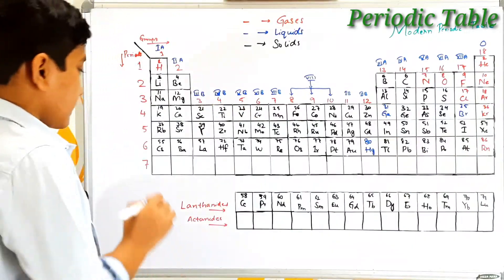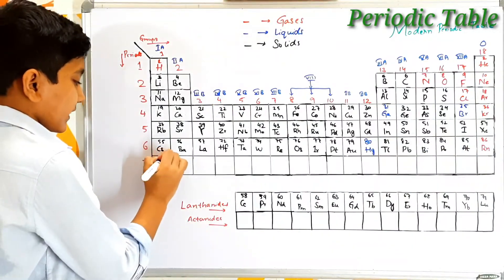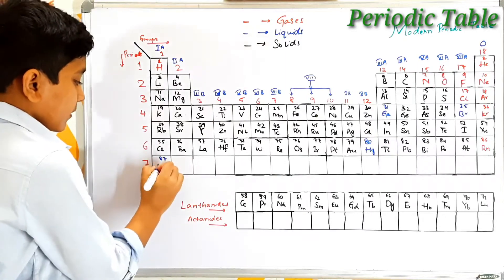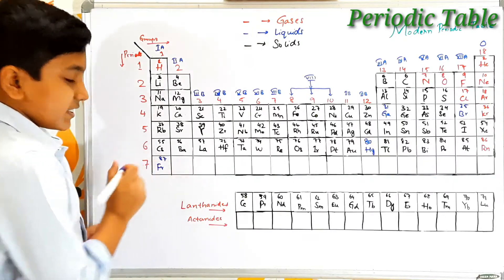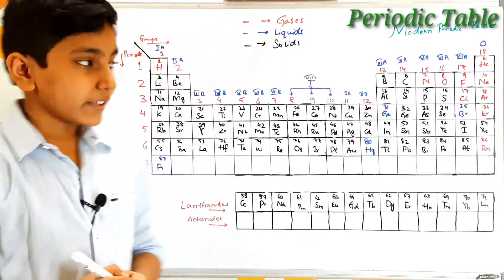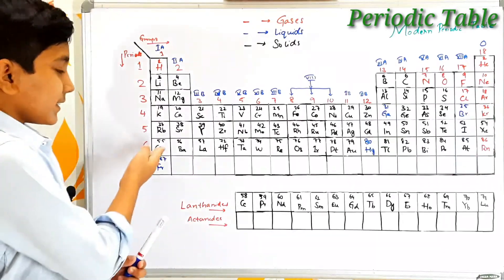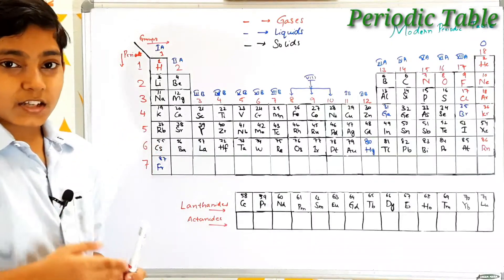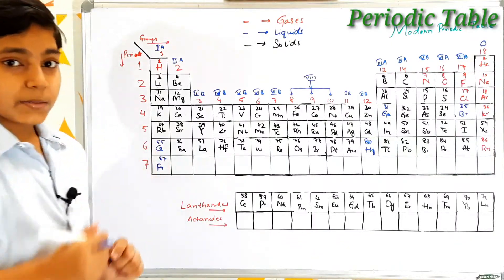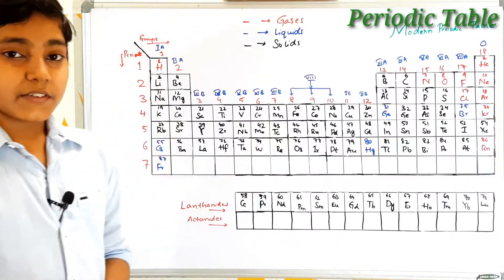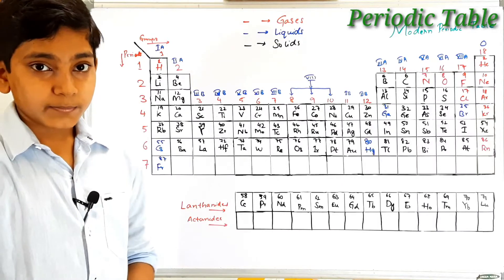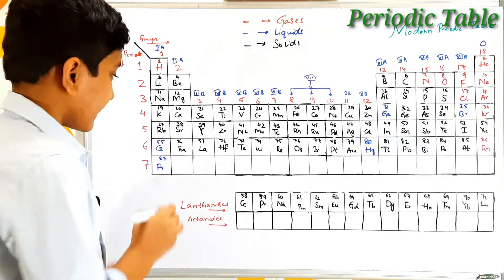Atomic number 87 is francium — its symbol is Fr. It is worth noting that cesium is also a liquid element. After francium we find the famous element radium with atomic number 88. Radium is the first radioactive element to be discovered.